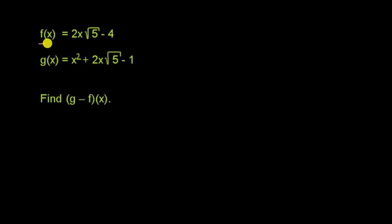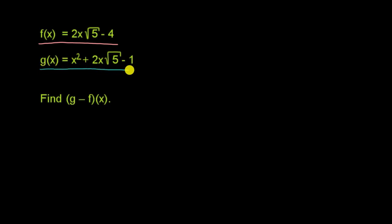We're told that f of x is equal to two x times the square root of five minus four. We're also told that g of x is equal to x squared plus two x times the square root of five minus one. And they want us to find g minus f of x.